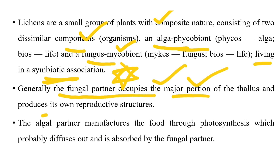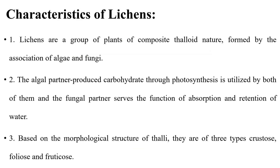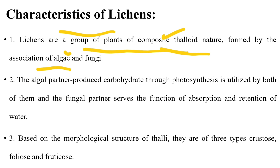Generally, the fungal partner occupies the major portion of the thallus and produces its own reproductive structures. In sexual reproduction, mainly only the fungal partner takes part. The algal partner manufactures food as they have chlorophyll pigment, which probably diffuses out and is absorbed by the fungal partner.